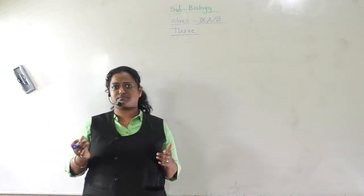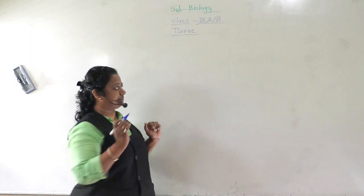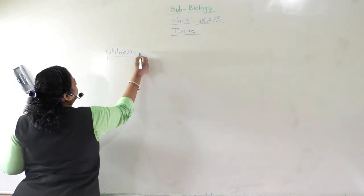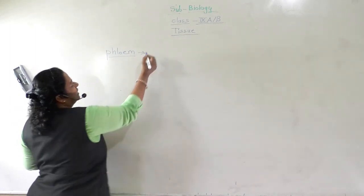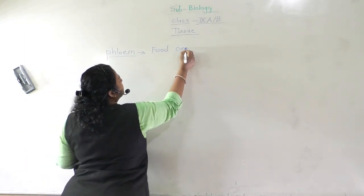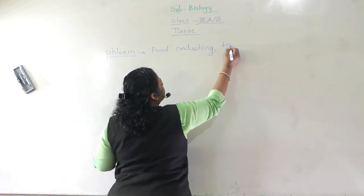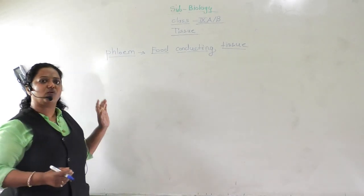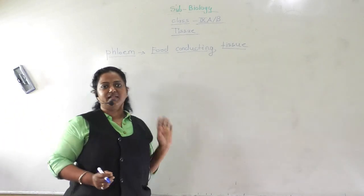Now we will go for the next complex permanent tissue, that is phloem. It will be very easy to keep in mind — phloem is a food-conducting tissue. Xylem was the water-conducting tissue, and phloem is the food-conducting tissue.